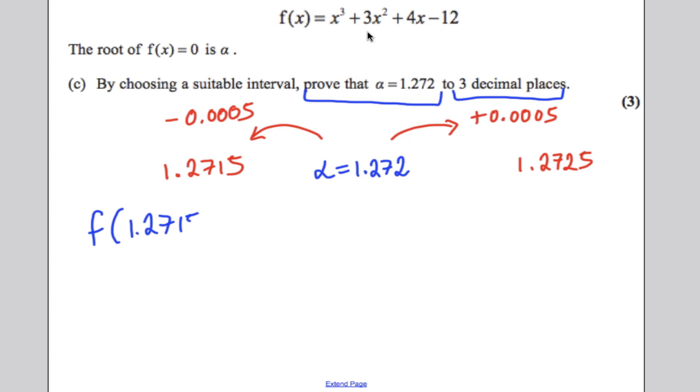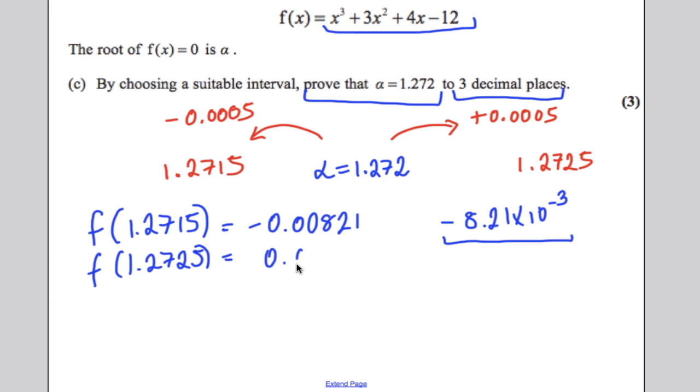And by F I mean substituting it in here. Again, use your calculator to do that for you without having to substitute and you get yourself negative 0.00821, or some of your calculators say negative 8.21 times 10 to the minus 3. Make sure you write it in standard form. You don't just write negative 8.21 because it is actually a decimal. Then F of 1.2725 and you get yourself 0.00827 or appropriately in standard form.